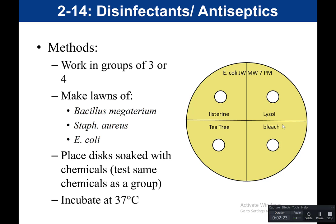After you make your lawn and swab the bacteria all over the plate, you're going to take your four chemicals that you're testing. In this plate, the chemicals being tested are Listerine, Lysol, bleach, and tea tree oil. You would divide your plate into four quadrants and label them with the chemical being tested. You would also label the plate with the organism, your initials, and your lab day and time.